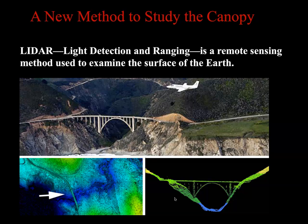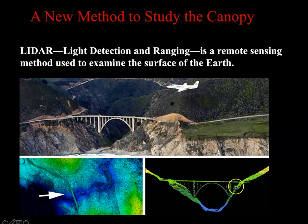A fairly new method of being able to measure the multi-layered canopy is a thing called LiDAR, where a plane flies over and sends a laser pulse that bounces down and back up and hits a sensor in the plane. You can see here what a bridge looks like normally, and then you can see the LiDAR image that was created — it shows different heights: the top of the bridge, the bottom of the bridge, and the canyon below the bridge.